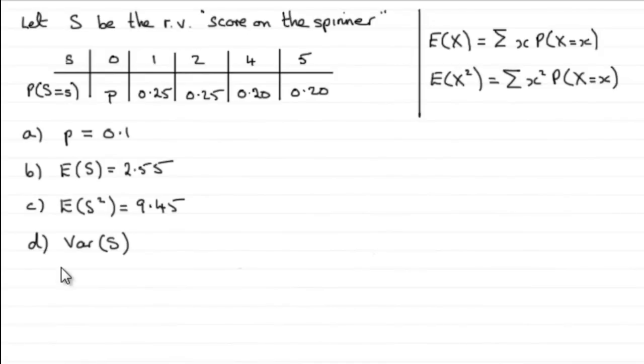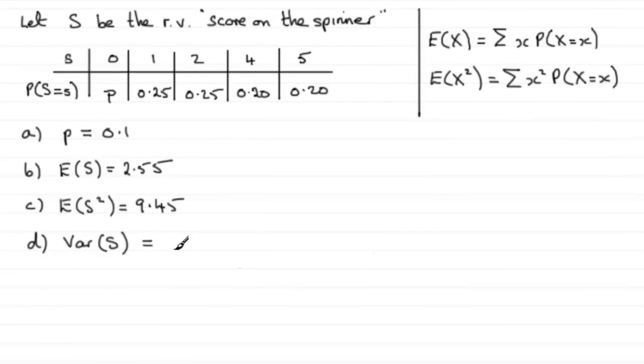Now for part D, we're asked to find the variance of S. To get the variance of S, we use this formula which you'll see in your formula books: the variance of X equals E(X²) minus E(X) all squared. So for this, it will be E(S²) minus E(S) all squared.